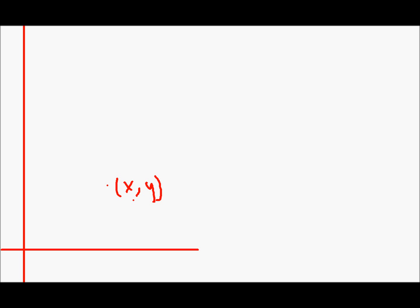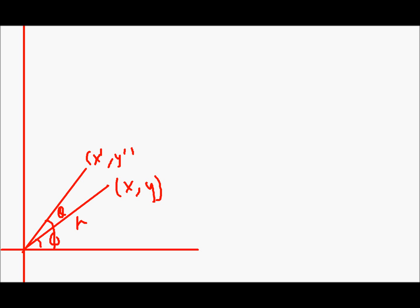Now we will see rotation. Let's say this is our axis and we have a point x, y. Assume it is oriented at an angle phi from the origin and the distance is r. Now we will rotate this point by an angle theta. So this angle is theta, and let the new coordinates be x', y'. We have seen that x is r·cos(phi) and y is r·sin(phi).